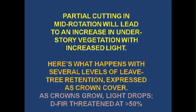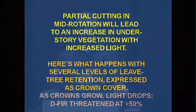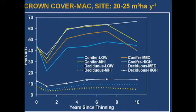We'll talk about partial cutting in mid-rotation starting with 50-year-old trees to increase undergrowth vegetation with increased light. We'll discuss what happens with several levels of leave-tree retention expressed as ground cover, with the idea that as crowns grow, light drops. We're looking at a rough threshold for Douglas fir in the understory: when crown cover goes above about 50 percent, you lose the Douglas fir — or at least it loses its momentum and ability to compete.